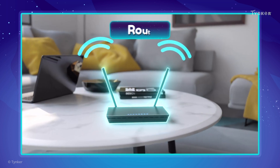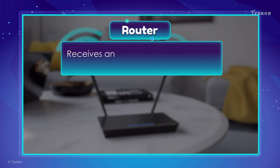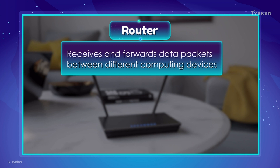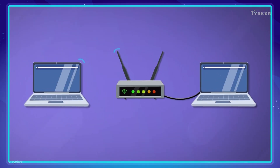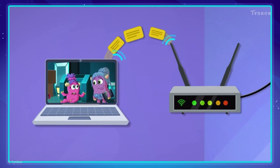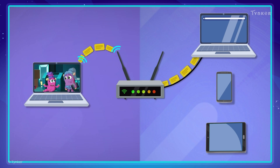A router is a device that acts like a post office. It receives and forwards data packets between different computing devices. Computing devices can be connected to a router, either wirelessly or with wires, to form a network. When a data packet is received by the router, the router checks its destination address, then sends it through the network to the correct destination.